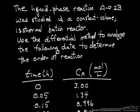In this problem we're going to analyze some liquid phase reaction data in a batch reactor, isothermal, and we're going to use the differential method to estimate the order of reaction and we can also then get the rate constant.